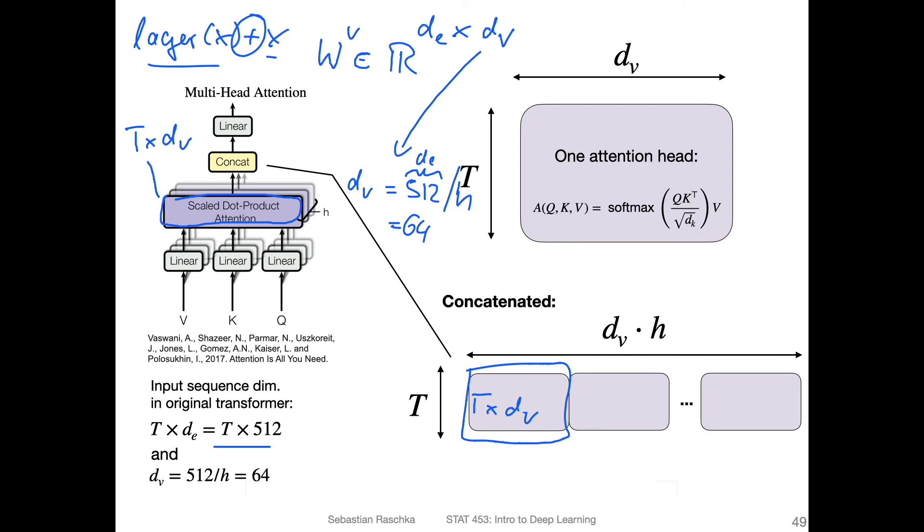So one of these essentially. Now we have h of them, right? So we repeat this h times, for instance, in the original paper eight times, and then we concatenate. So what we will get is eight times, so we will get h times, so we'll get dv times h. And if dv is 64, we will get 512 dimensional input back here.